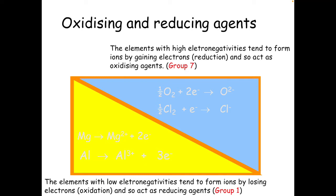Elements with high electronegativities — and we remember doing this in Unit 1 — like Group 7, specifically fluorine, which has the strongest electronegativity in the whole periodic table. Those are the ones that want to pull electrons towards them, so they want to gain electrons. Because they're reduced, they're going to be some of the strongest oxidising agents. Group 7 are actually really good oxidising agents — they're used for things like bleaches and disinfectants.